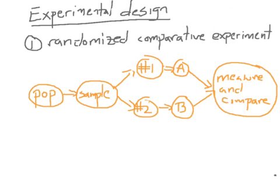Now we're getting into our first kind of experimental design. Comparing to last time — sampling designs were how you actually picked a sample. Now we're talking about how you actually run the whole experiment once you have that sample. The first kind of experimental design is something called a randomized comparative experiment. We're only going to have about three different types of experimental designs, and this is probably the most common one.